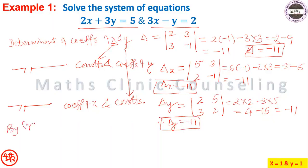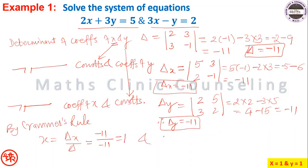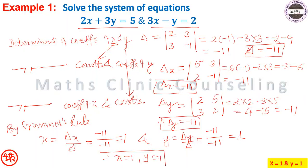By Cramer's rule: x equals delta_x divided by delta, which is minus 11 divided by minus 11, equal to 1. And y equals delta_y divided by delta, which is minus 11 divided by minus 11, equal to 1. Therefore x equals 1 and y equals 1 is the answer.